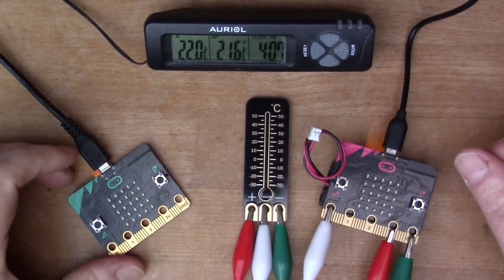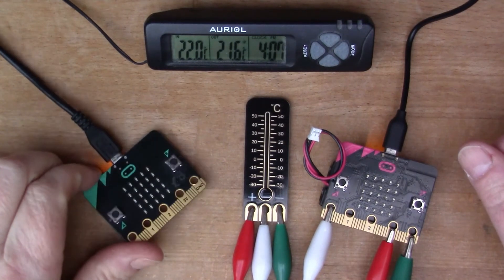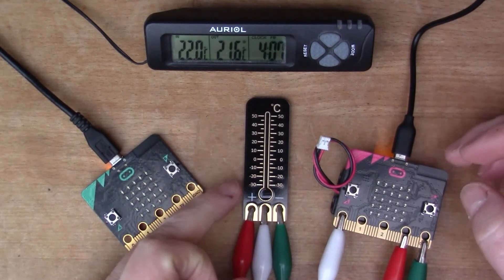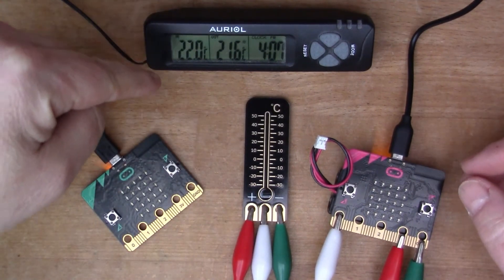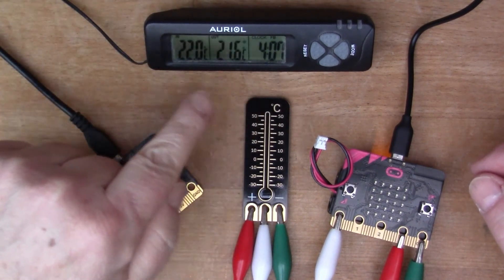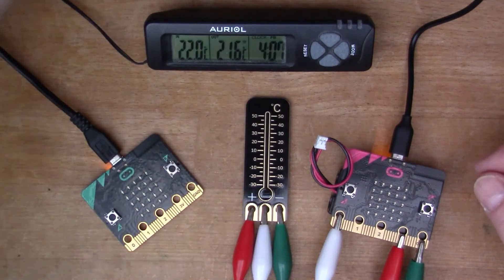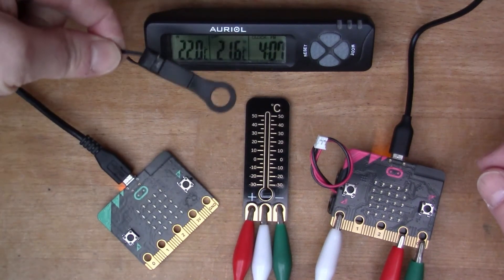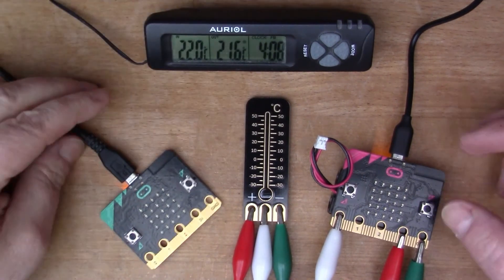I've got both micro:bits connected up now. The one on the left is looking at the internal temperature from the CPU, the one on the right is wired up to the TMP36 so we can compare them. I've also got another thermometer here so you can see the temperature in the room, so that's reading 22 degrees or just less than 22 degrees. This thing's got a sensor inside and it's also got one of these external sensors you can hang out the window, and they are both reading slightly differently but never mind.